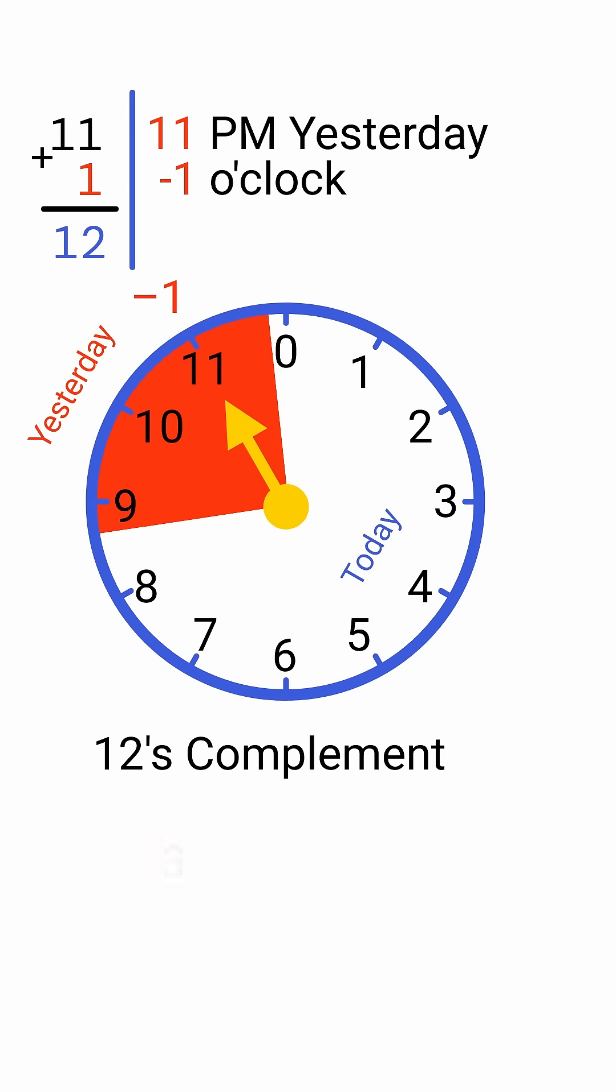For example, to find negative 3, take the 12's complement of positive 3, which is 9. So minus 3 hours maps to 9 o'clock.